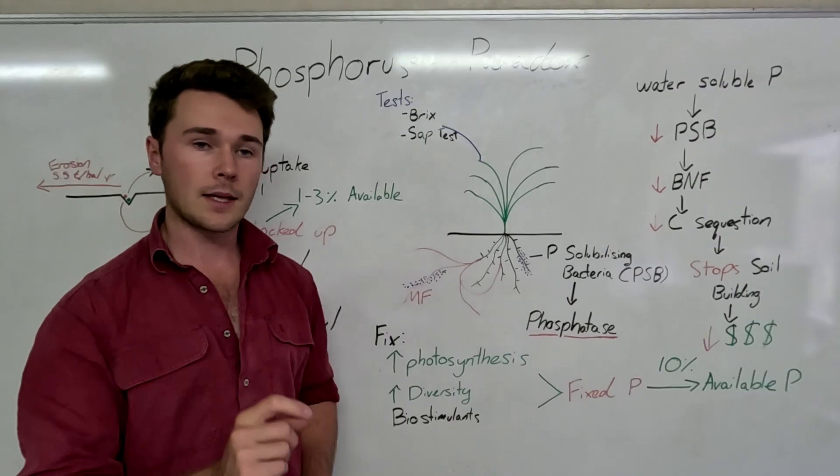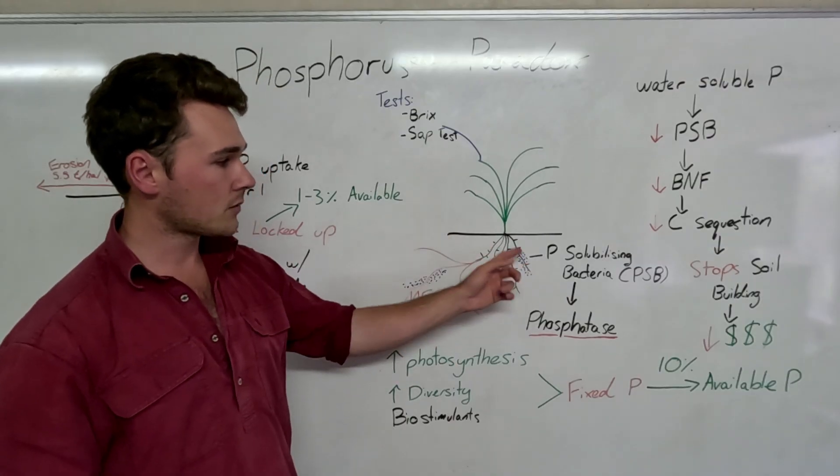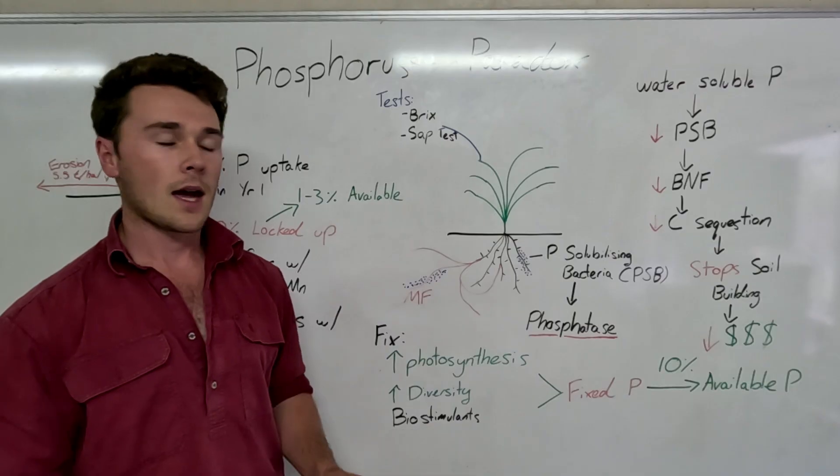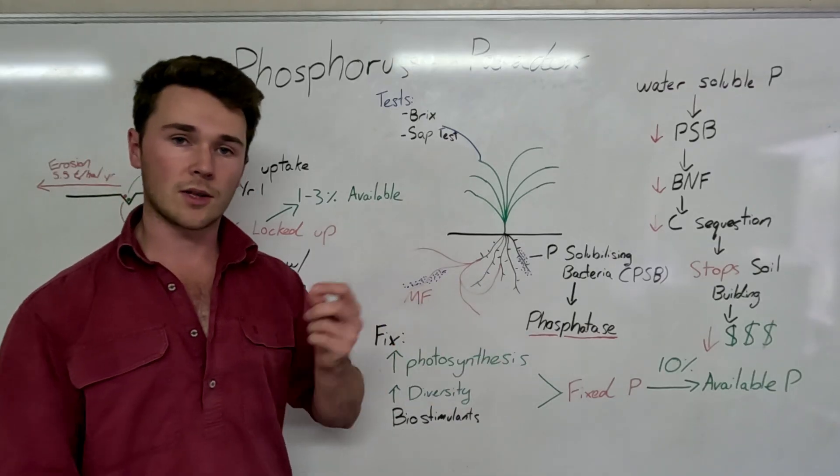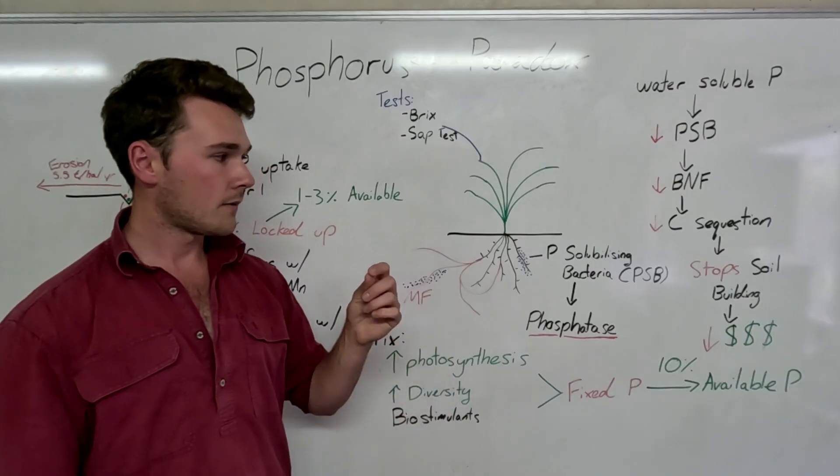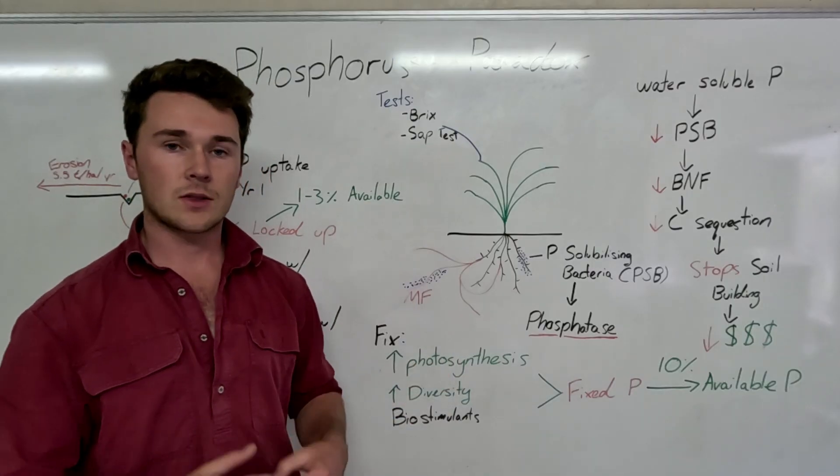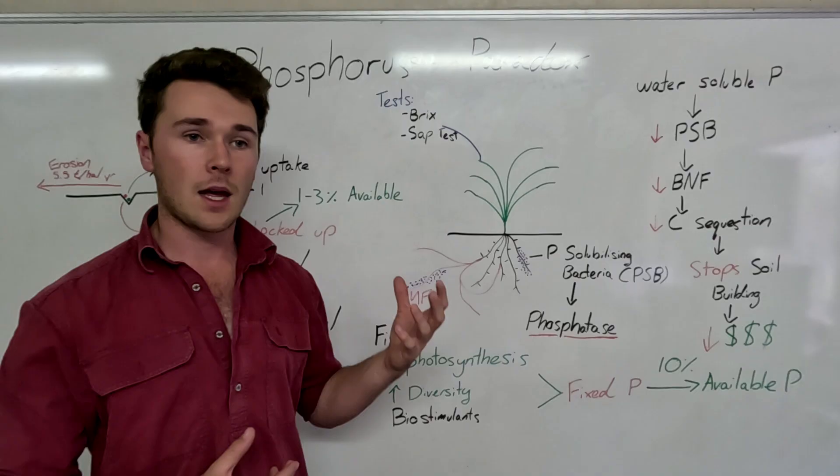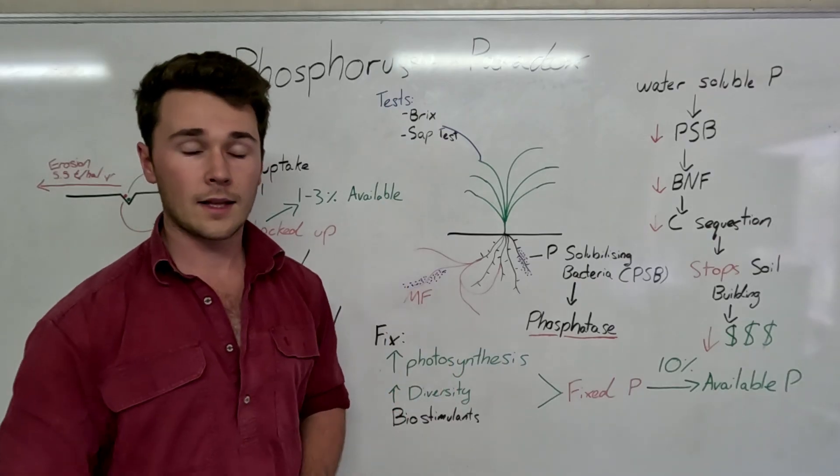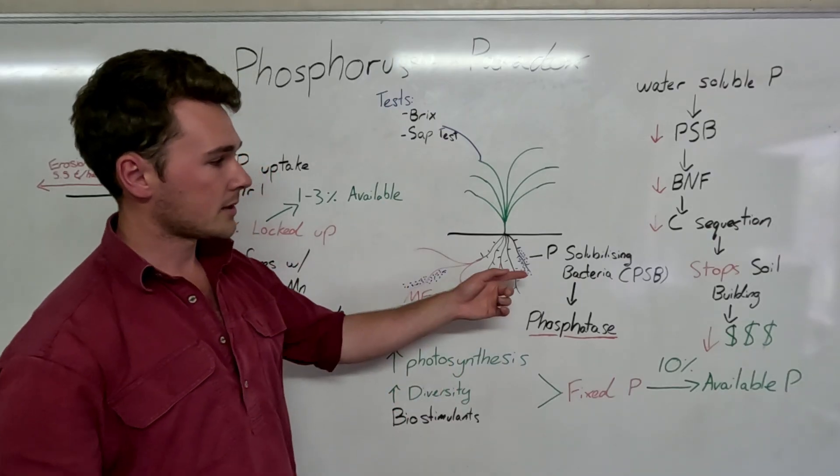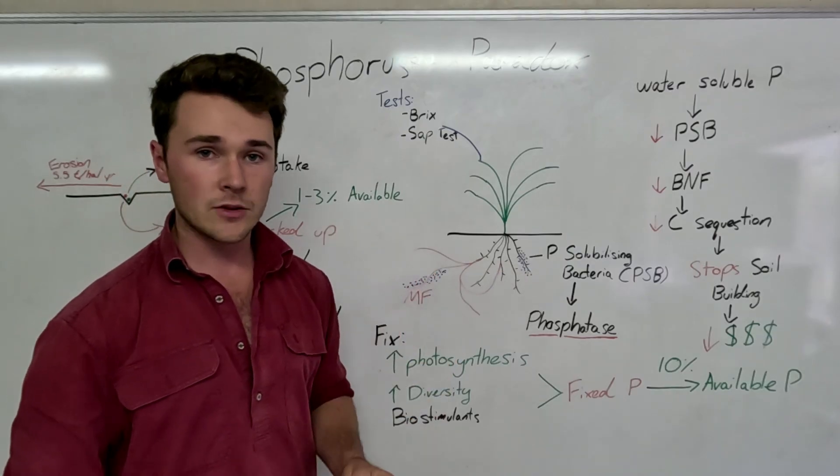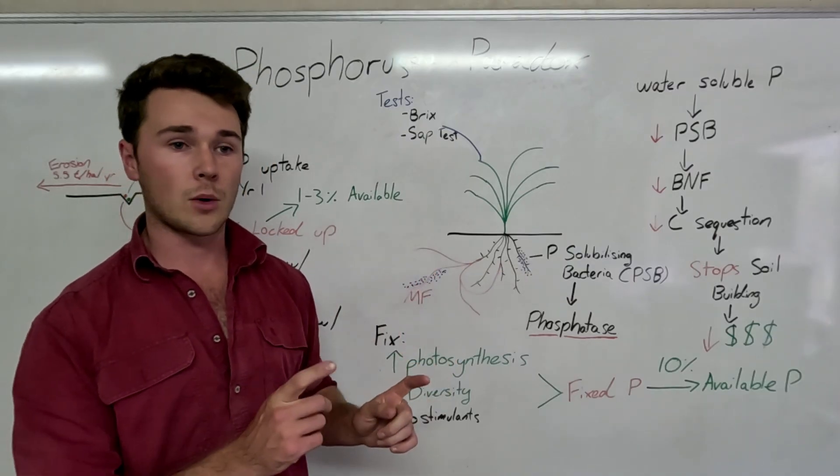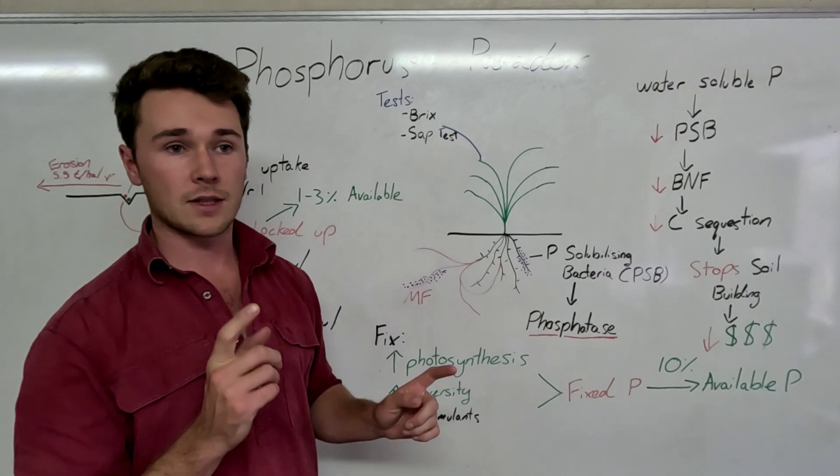Now that's one way. The other way is that the plant can then feed phosphorus solubilizing bacteria to then make phosphatase. Likewise mycorrhizal fungi itself can also feed those phosphorus solubilizing bacteria. So that's what happens when you have a really healthy soil with lots of microbes. Now the interesting thing about phosphorus solubilizing bacteria is that it stimulates biological nitrogen fixation, which is then actually required for carbon sequestration.